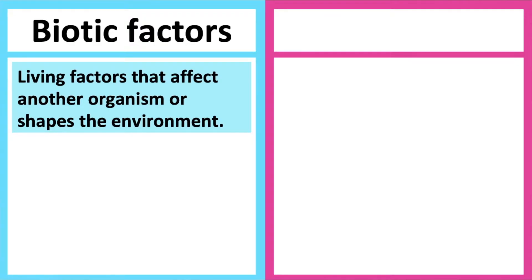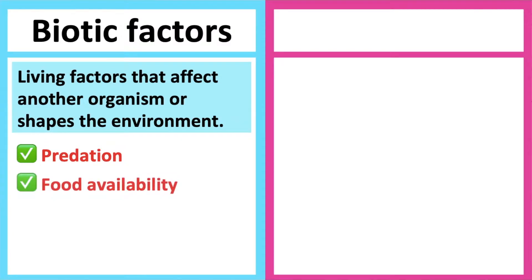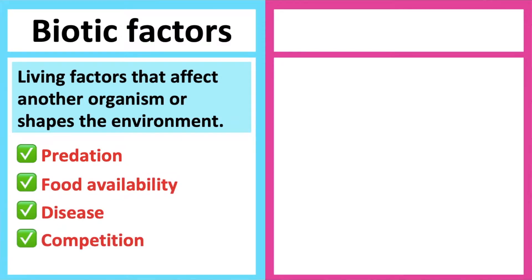There are different biotic factors, for example: predation, availability of food, disease, and competition for resources or habitat.